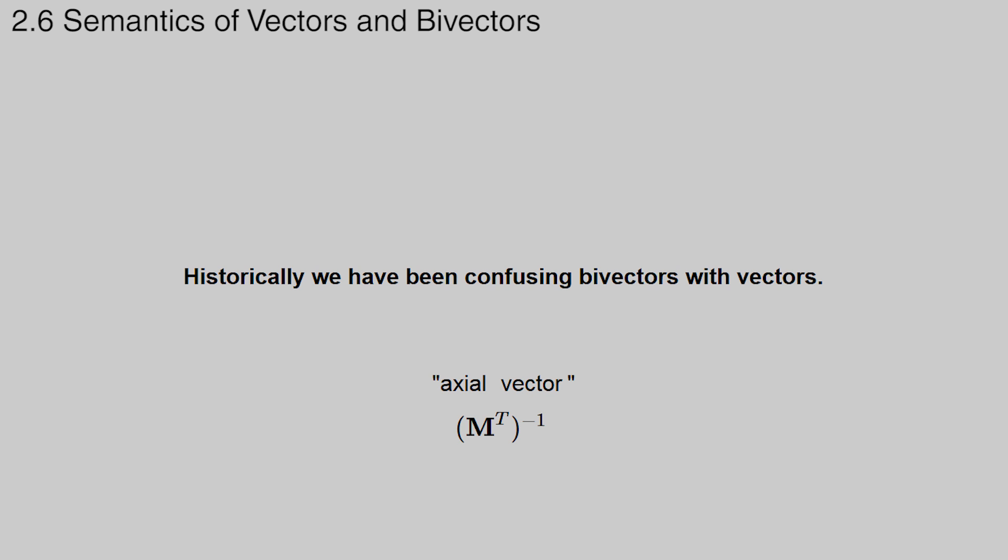Here's an example. You might have seen how normal vectors transform differently than regular vectors, using the inverse transpose of the matrix, instead of the matrix itself. That's because they are not really vectors, but actually bivectors, which we have typecast to vectors.